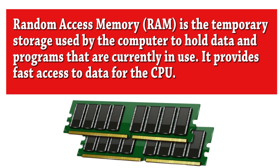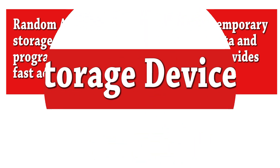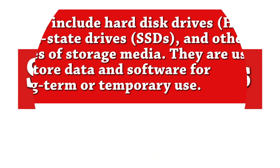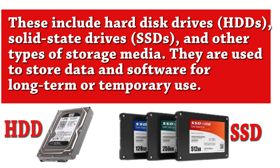The CPU is the primary component that carries out the actual data processing. Memory (RAM), or random access memory, is the temporary storage used by the computer to hold data and programs currently in use. It provides fast access to data for the CPU. Storage devices include hard disk drives (HDDs), solid state drives (SSDs), and other types of storage media used for long term or temporary use.